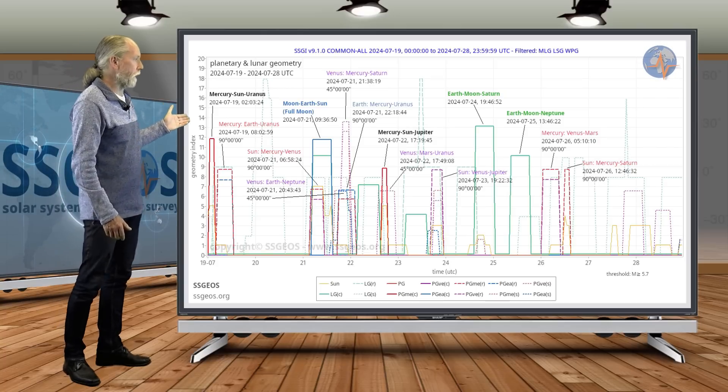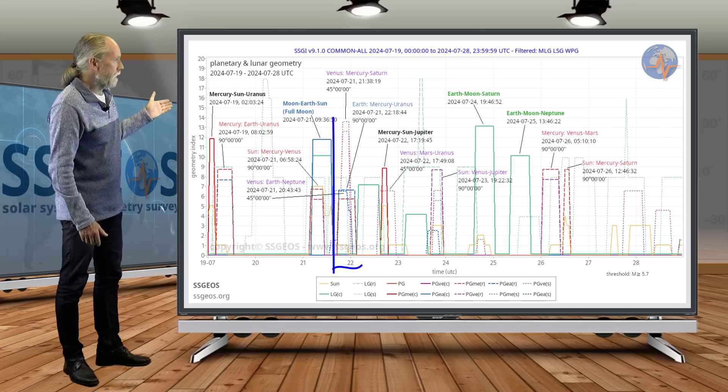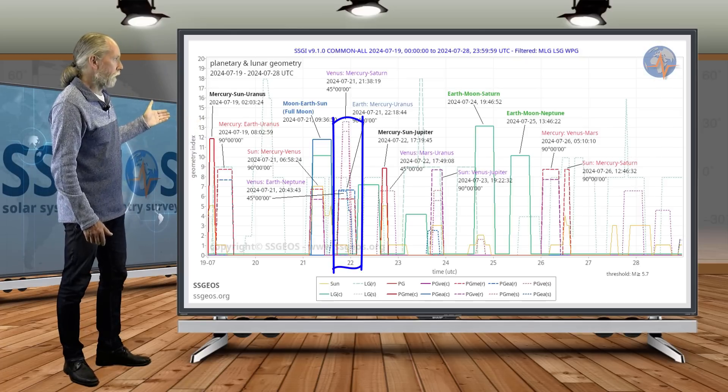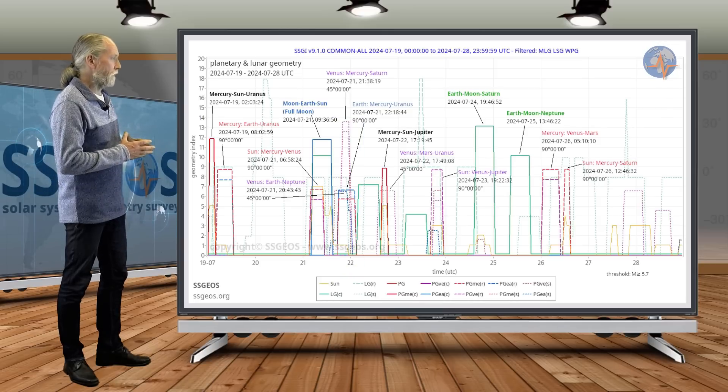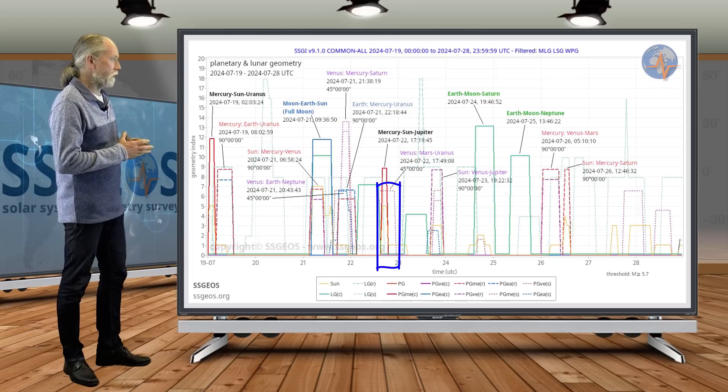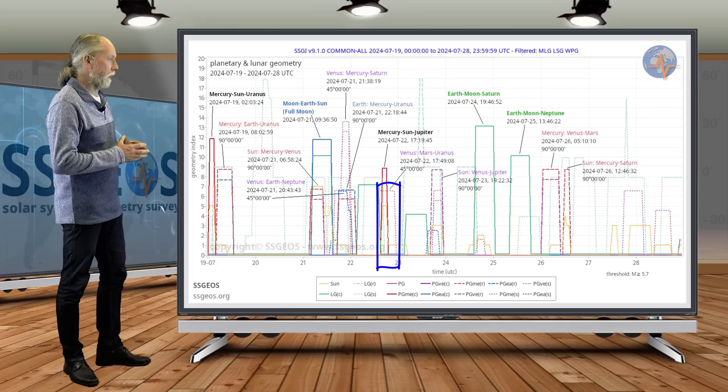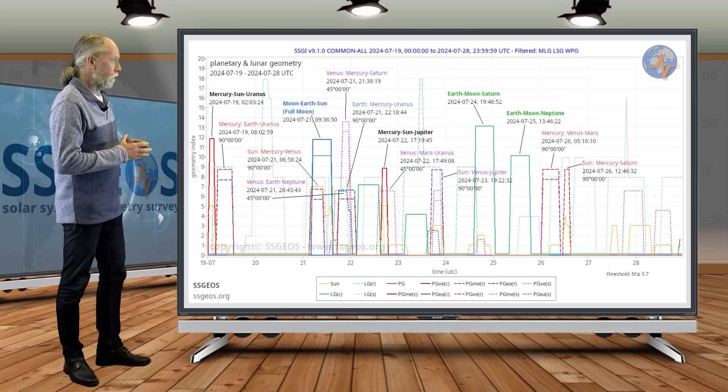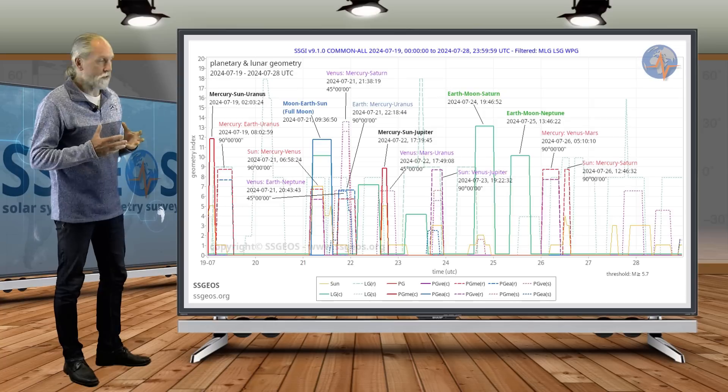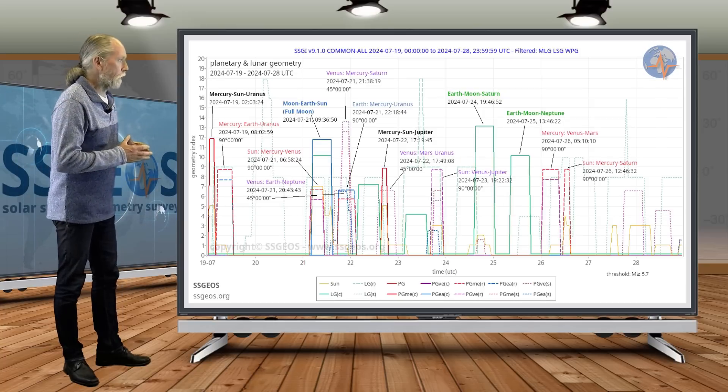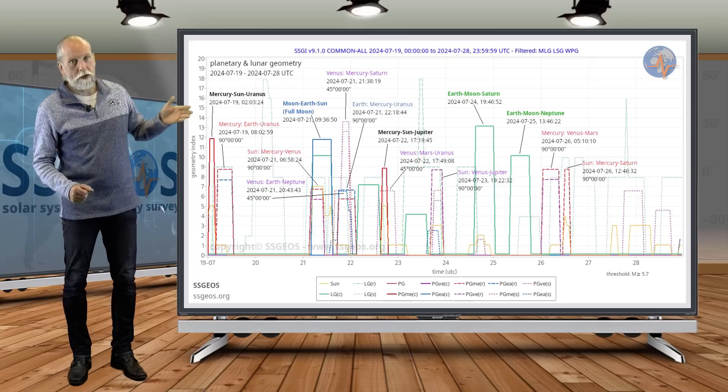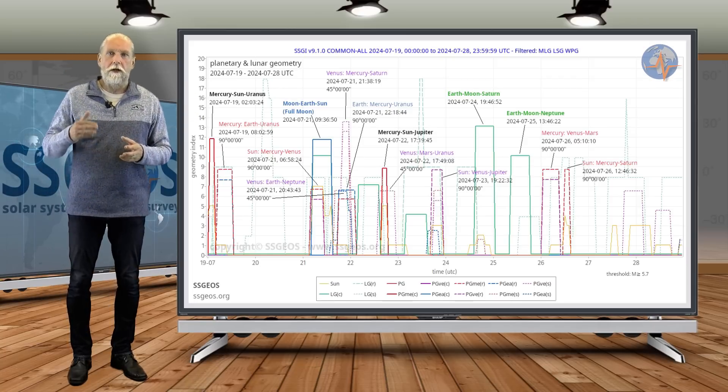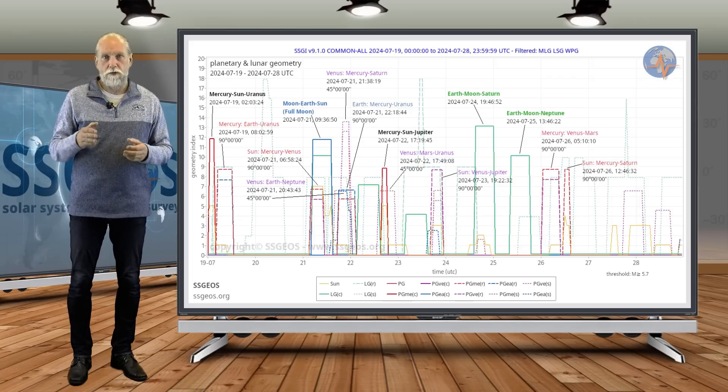Venus-Earth-Neptune, semi-right angle. Venus-Mercury-Saturn, semi-right angle. That's almost at the same time practically. And Venus-Mars-Uranus, that is on the 22nd, also semi-right angle. And Mercury is in there as well. So we could see the typical clustering of stronger earthquakes at the time and following that convergence, typically higher 5 and into the 6th magnitude range.